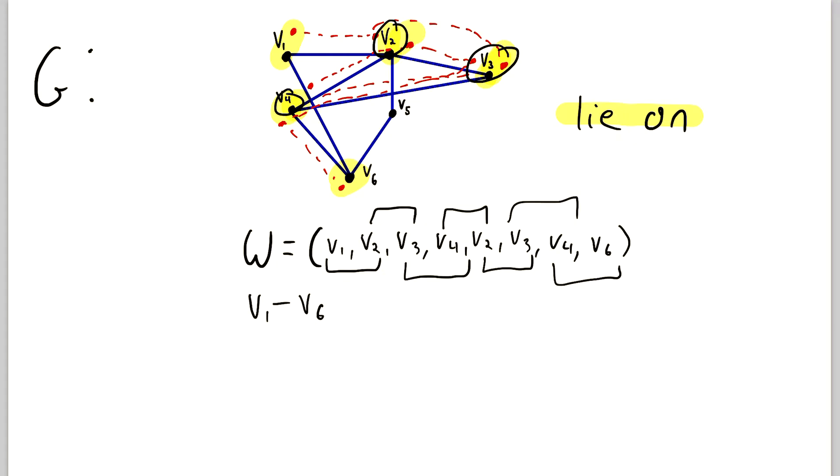But here's a question. How many edges did we traverse in going from V1 to V6? Well, we can count them up quickly. 1, 2, 3, 4, 5, 6, 7 edges. We traversed 7 edges in the walk W.